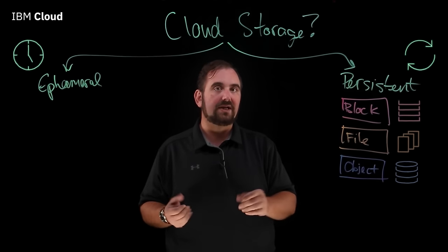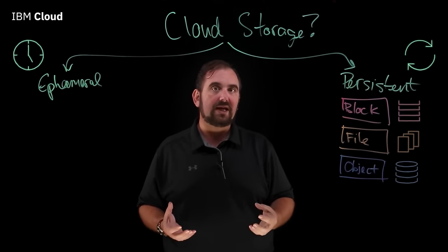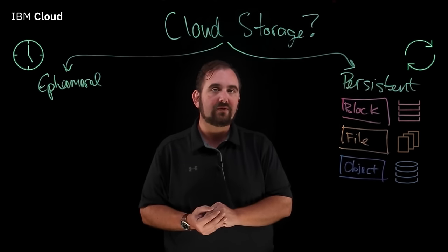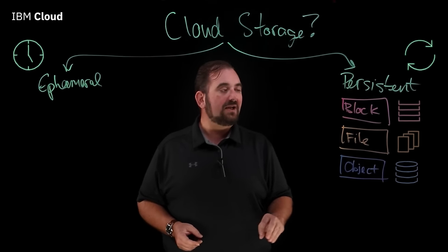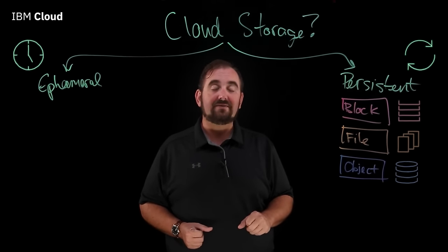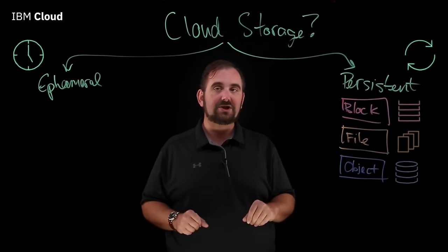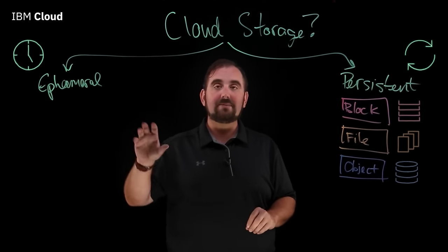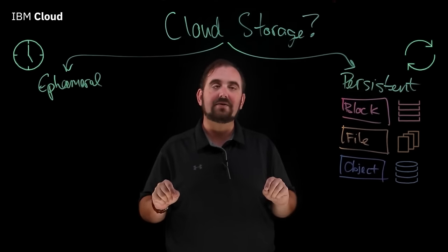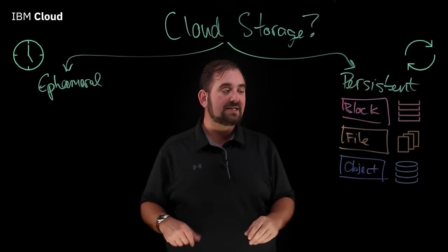File storage is generally attached directly to your virtual server — you mount it via a mount point. File is useful because you can do a file share that is highly available between two different machines, where you've got a primary and a secondary. Whenever the primary machine has a problem, you can lock the file share on it, unlock it on the secondary machine, and you fail over while still maintaining data integrity.